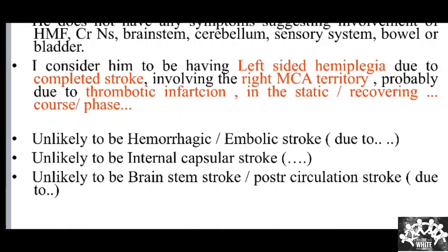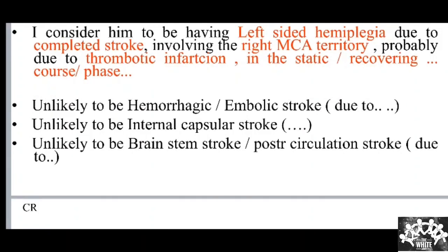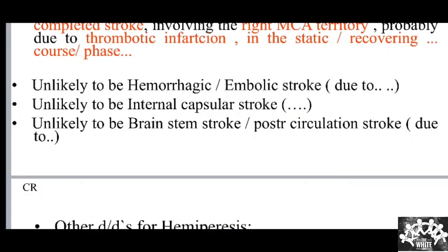This is a completed stroke involving the right MCA territory — because upper limb is more affected than the lower limb — probably due to thrombotic infarction, as it is a wake-up stroke in a static or recovering course. It is unlikely to be hemorrhagic or embolic because there was no sudden onset, no headache, vomiting, convulsions, seizures, or higher mental function abnormality at onset. It is also unlikely to be an internal capsular stroke by history because of the asymmetric gradient between left upper limb and left lower limb weakness. It is unlikely to be a brainstem stroke because there is no crossed field — the left lower half of the face weakness is on the same side as the limb weakness, consistent with UMN-type facial nerve involvement.